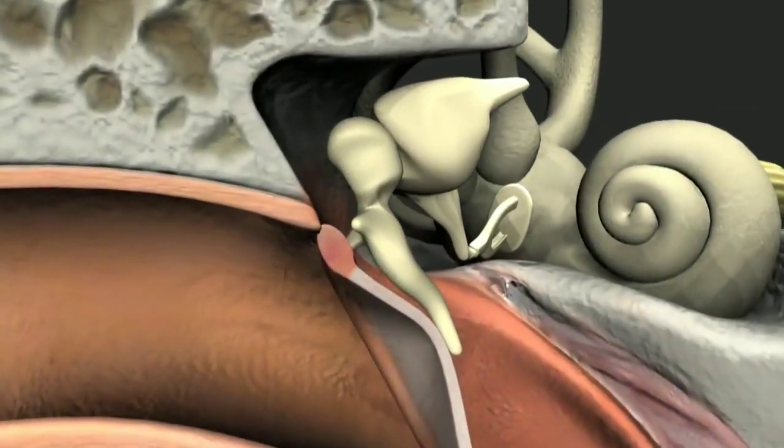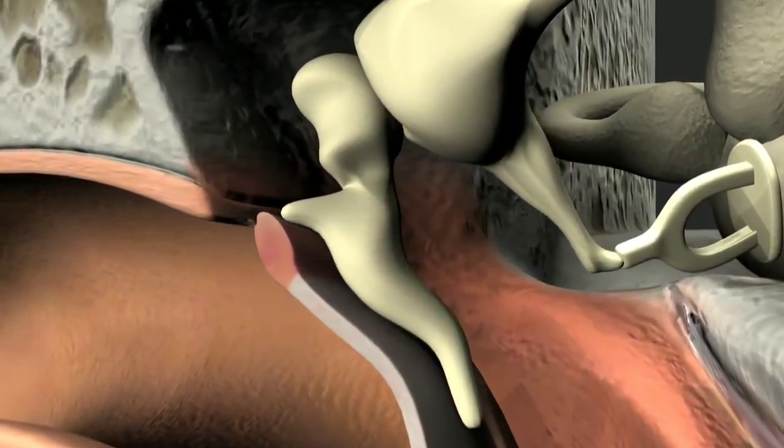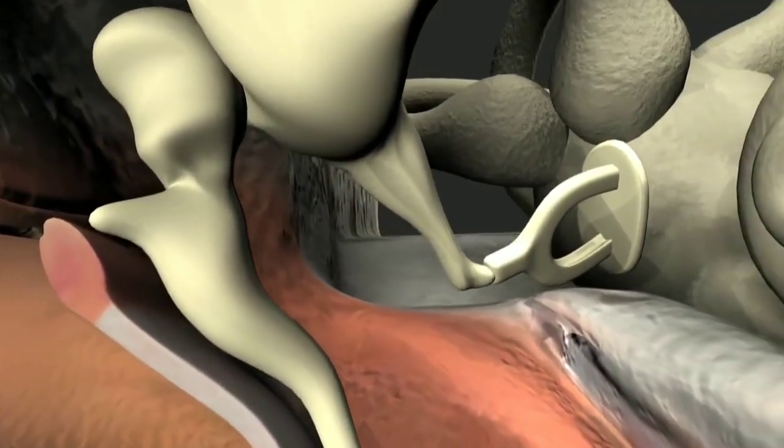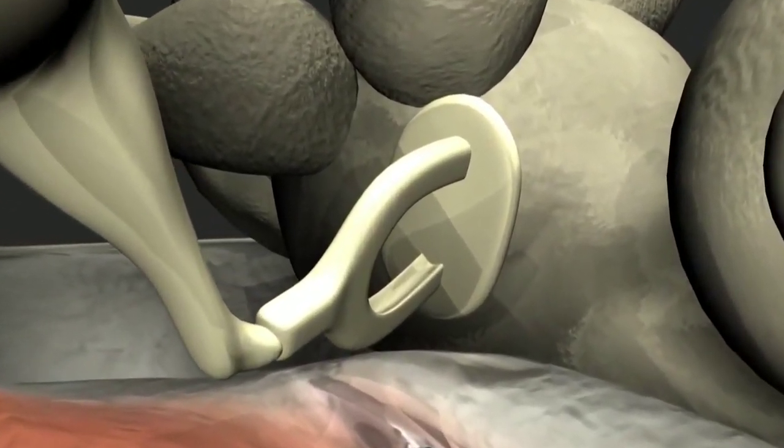The handle of the malleus is attached to the tympanic membrane, and the base of the stapes, known as the stapes footplate, sits loosely in the oval window of the cochlea, held in place by the annular ligament.